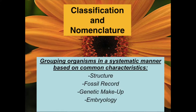We're going to talk about classification and nomenclature. This is for regular biology, just to cover basic concepts. Classification is simply a system of naming organisms found on the planet in a systematic way, based on common features or common characteristics or similarities.